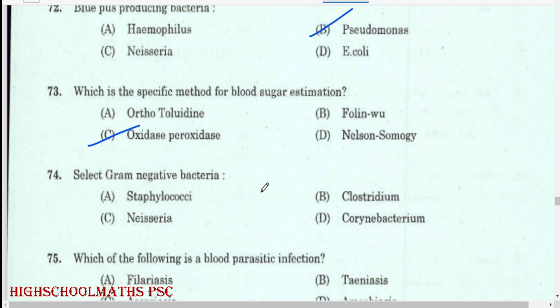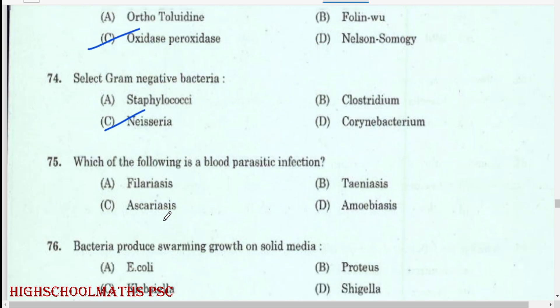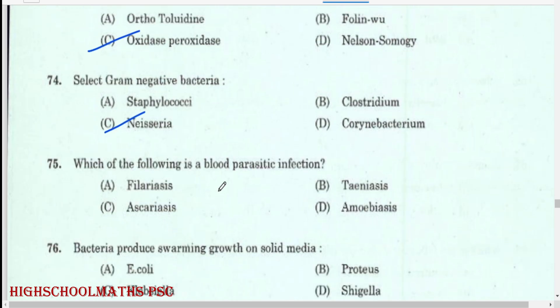Select gram-negative bacteria: Neisseria. Which of the following is a blood parasitic infection? Filariasis.